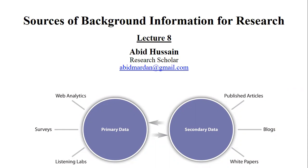In today's lecture number 8 of our complete research methods course, I will shed light on sources of background information for your research. There are two types of sources you want to quote in your research: primary sources and secondary sources. I have made a table in an easy way, and this table will be bifurcated — one side has primary sources and the other has secondary sources.